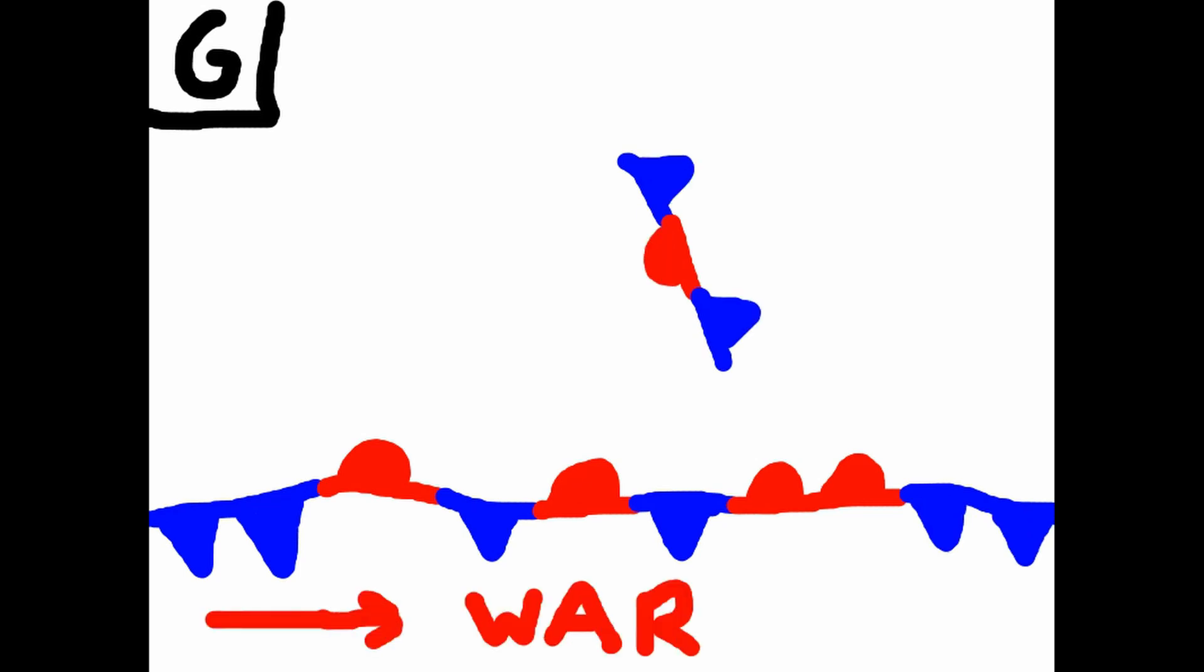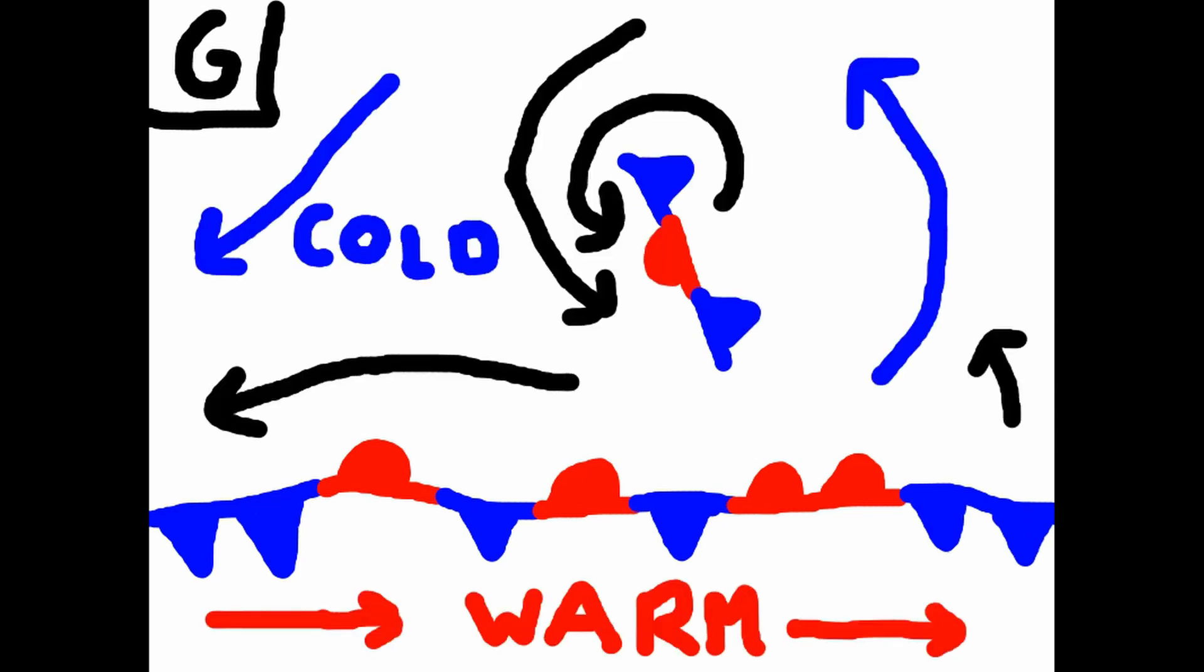There are two types of fronts, mesoscale ones and synoptic scale ones. The latter are most widely known, and they're the ones that are shown on surface weather charts.